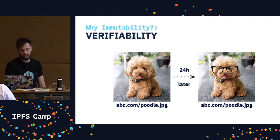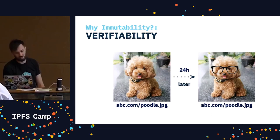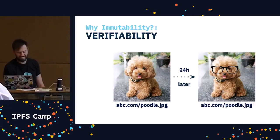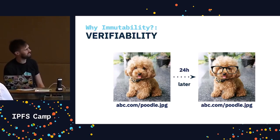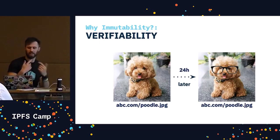In the web of today, I can put my poodle picture up at abc.com/poodle.jpg. And 24 hours later, I can doodle on my poodle — say, add some glasses to make him look a bit more sophisticated. The problem is that the content isn't inherently tied to the address. The content can change, but the URL doesn't, so depending on when you access this poodle, it could be completely different.